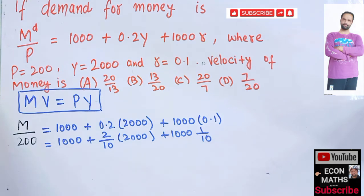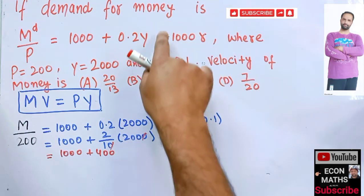So this means the zeros get cancelled. So we have here 1000, then we have, or let me write it in this fashion, we have 1000 plus 400.